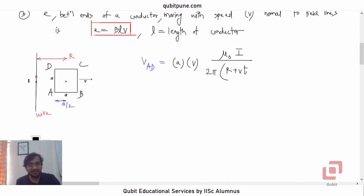So, R plus VT is actually the center. Because the central distance is actually R. So, R plus VT is the location of the center of the loop from the current carrying conductor. And we need to subtract A by 2 from this because AD is closer to the current carrying conductor than the center by an amount A by 2. So, this is V_AD.